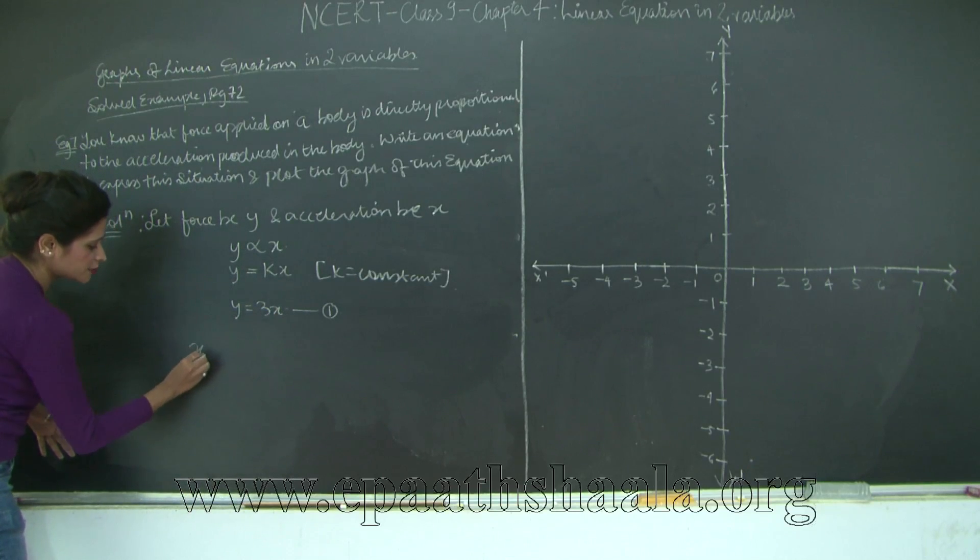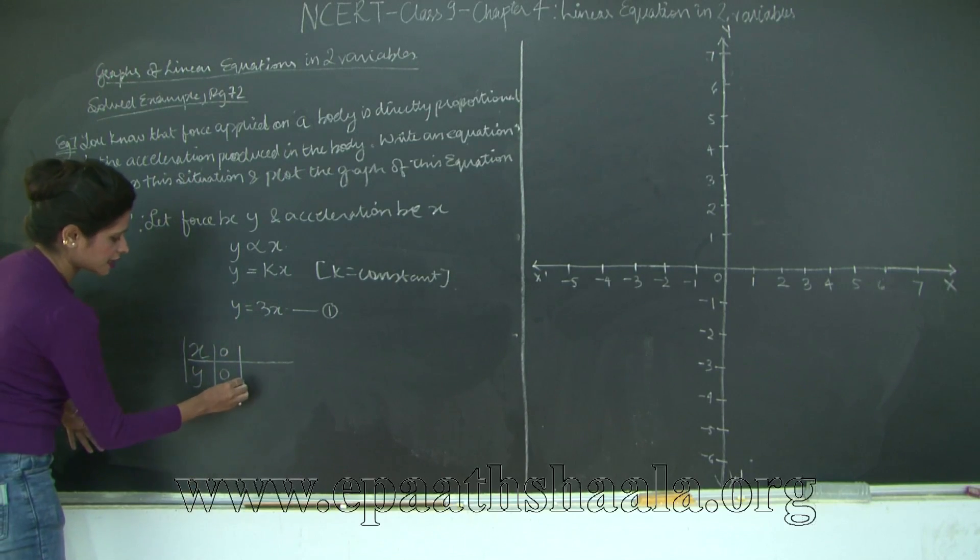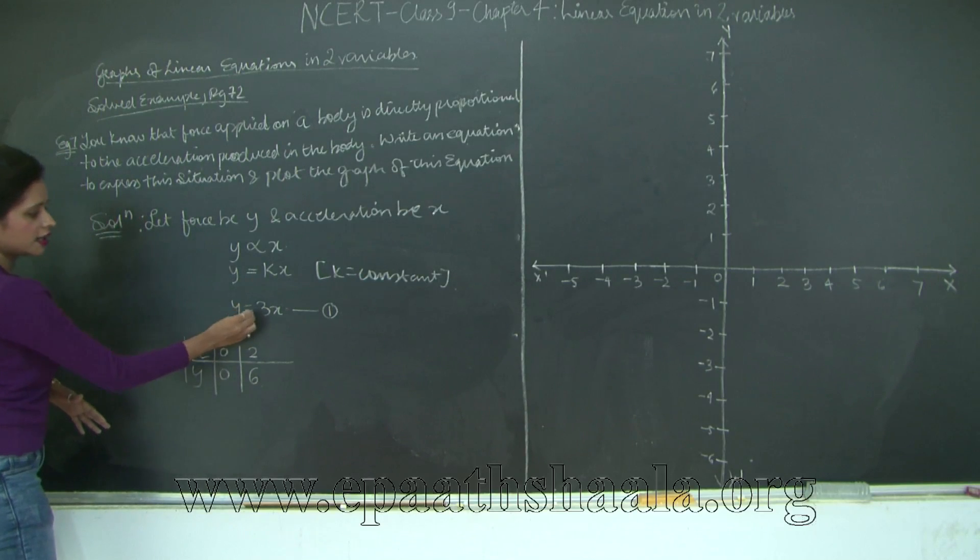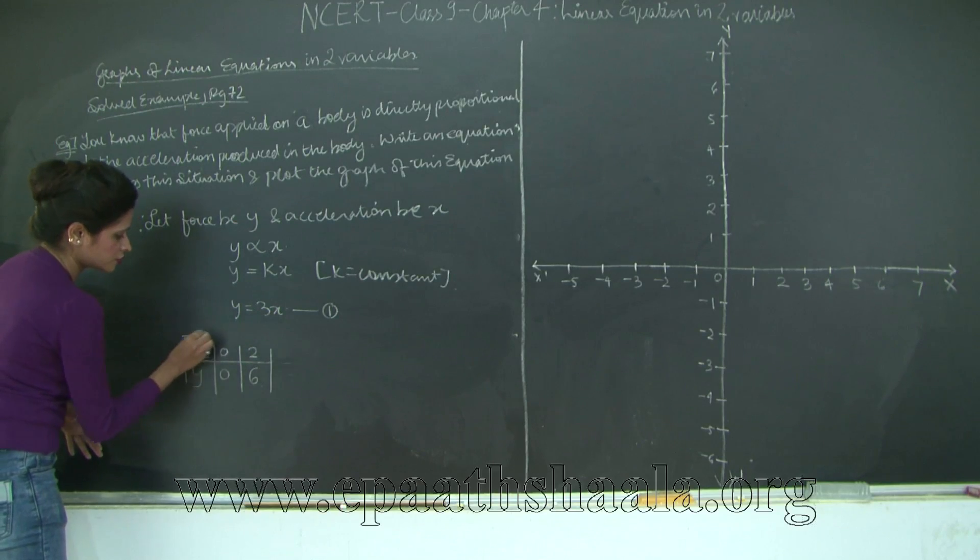Now let's draw a table x and y. So one value of x as 0 will give me y as 0 and my value of x as let's say 2 will give me y as 6. If I take 0, y becomes 3 into 0 which is 0, and if I take x as 2, it will give me y is equal to 3 into 2 which is 6. So I think this should be enough to draw a graph.